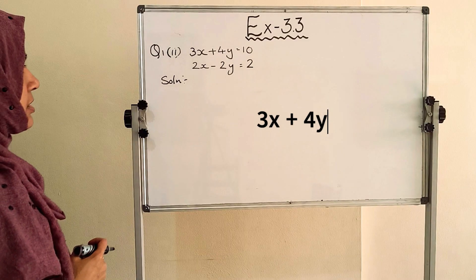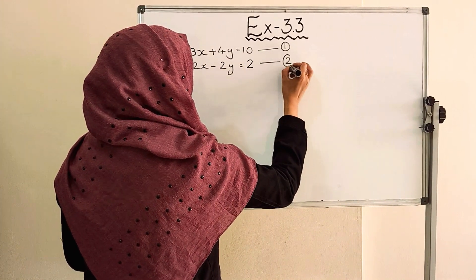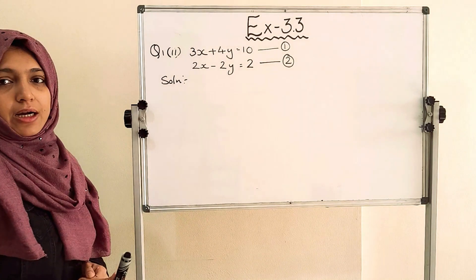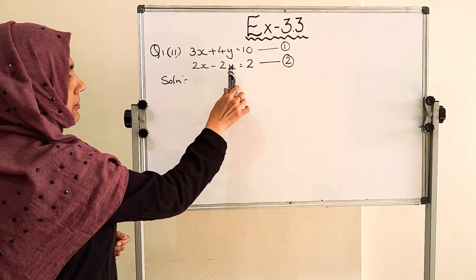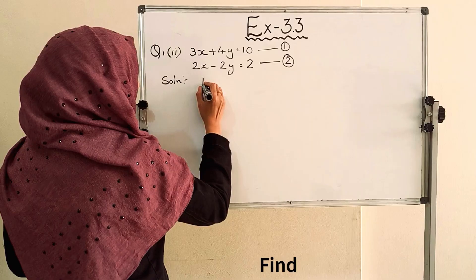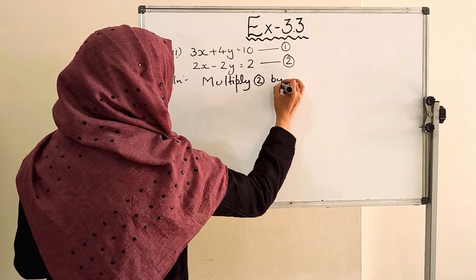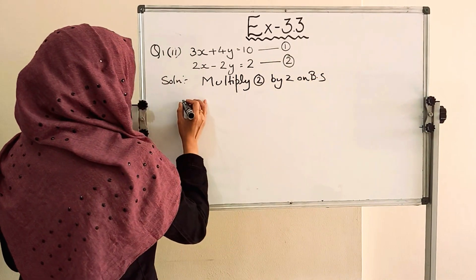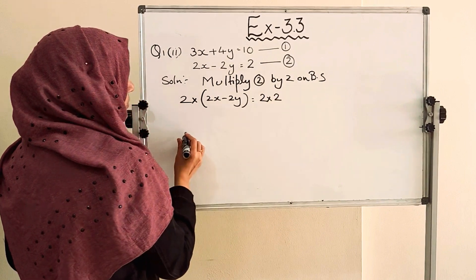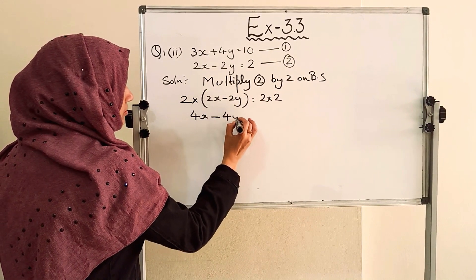Next question: 3x plus 4y equals 10, and 2x minus 2y equals 2. Let this be equation number 1 and this is equation number 2. In this case it is better to take variable y and make the coefficients same, because 3 and 2 are both prime, but 4 is divisible by 2. So we multiply equation number 2 by 2 on both sides: 2 into (2x minus 2y) equals 2 into 2, giving 4x minus 4y equals 4.